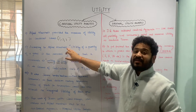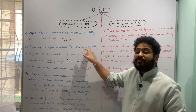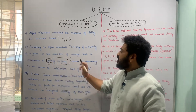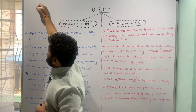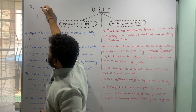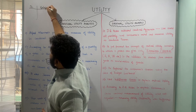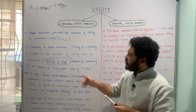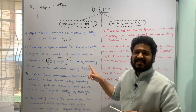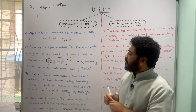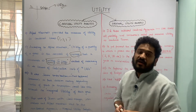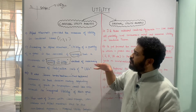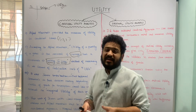Alfred Marshall said that the utility of a quantity of a good is the amount of money a consumer is willing to pay, instead of merely measuring it in terms of utils. So rather than using the subjective measure of utils, Marshall's approach is an improvement — the utility of a quantity of a good is the amount of money a consumer is willing to pay for that particular commodity.